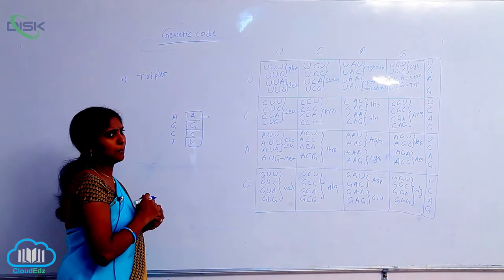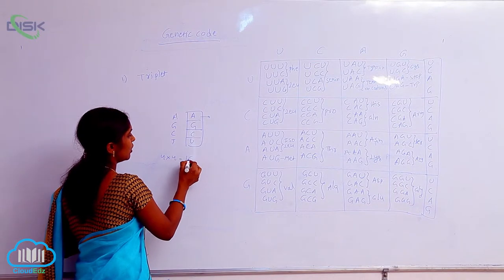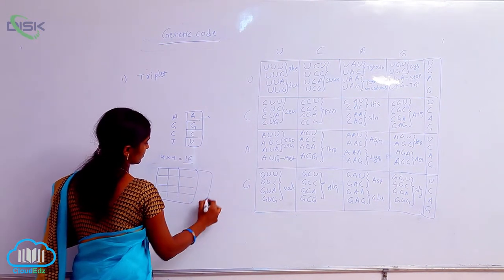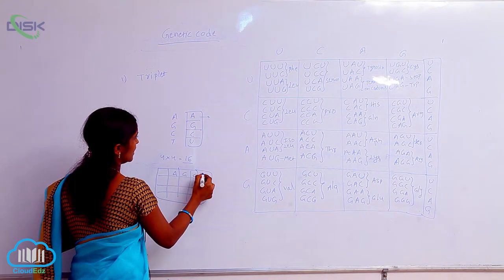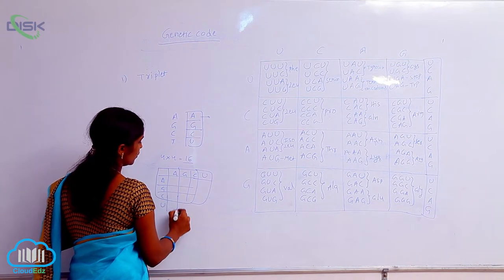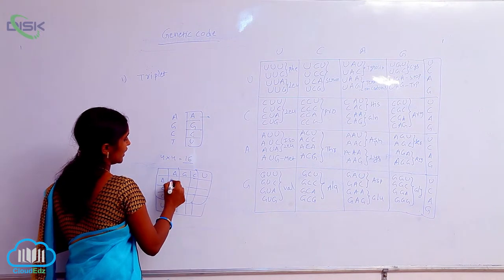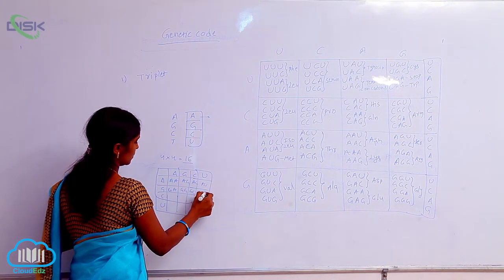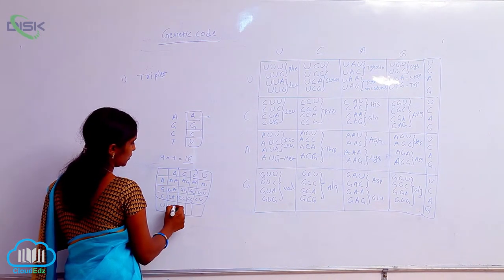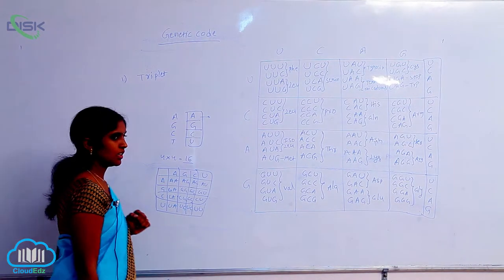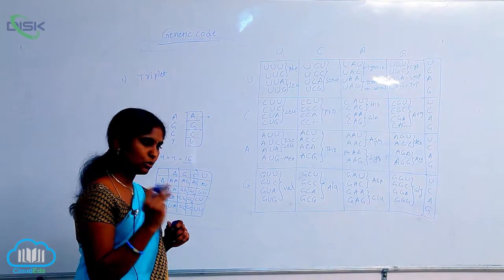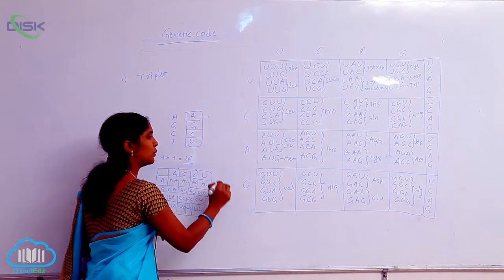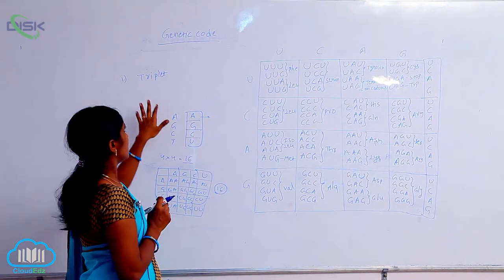Then they considered the doublet form. Doublet means 4 × 4, giving only 16 codons. Totally, if the codon is doublet — meaning 2 nucleotides — only 16 codons are formed. 16 is also not sufficient for coding the 20 amino acids. Then the triplet concept came, given by scientist Gamow.